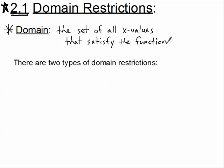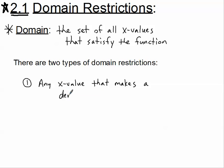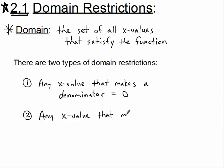There are really only two types of domain restrictions. First, we have to restrict any x value that makes a denominator equal to zero — that has to be taken out of the domain. The second restriction: we have to take away any x value that makes an even radicand negative.